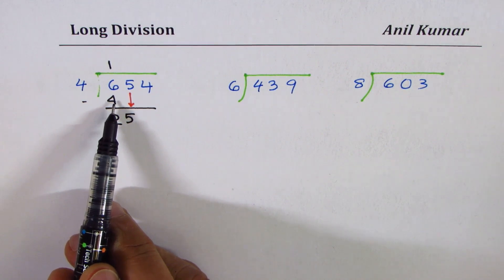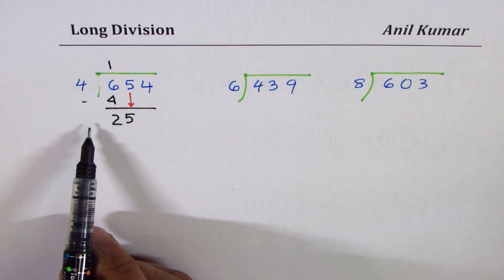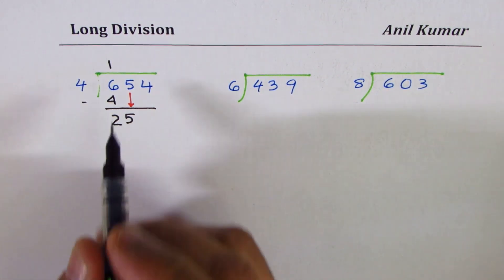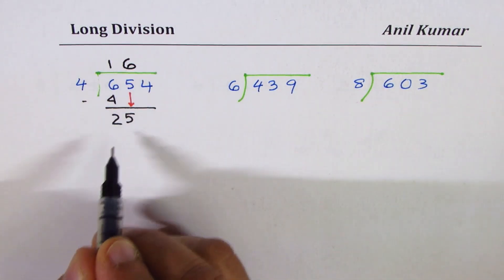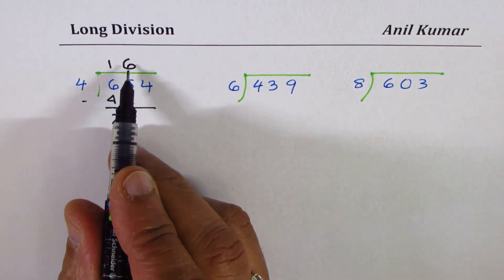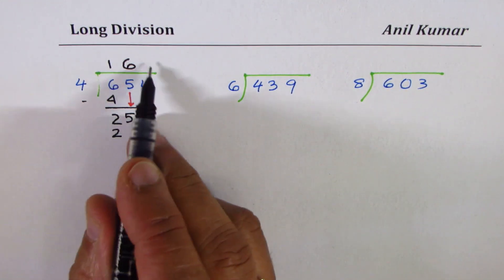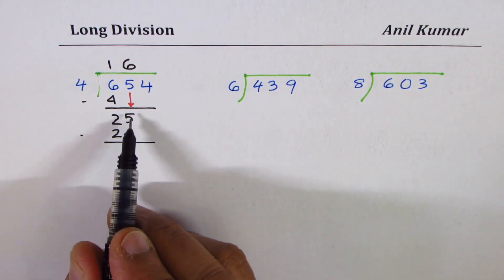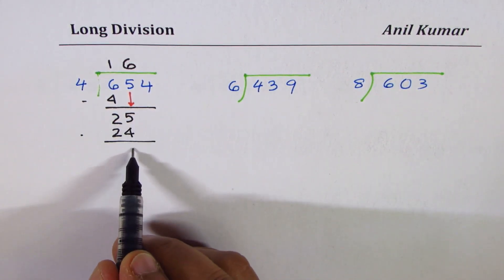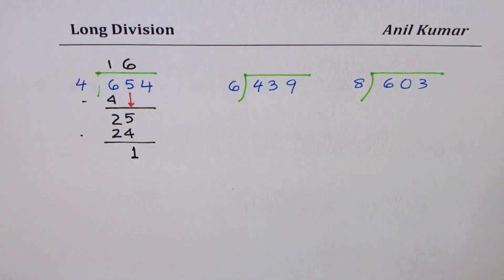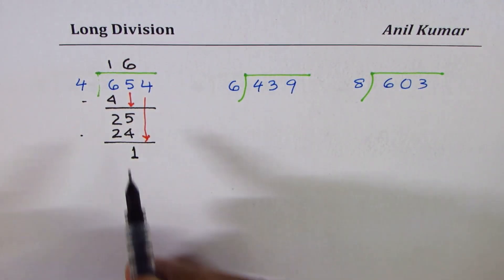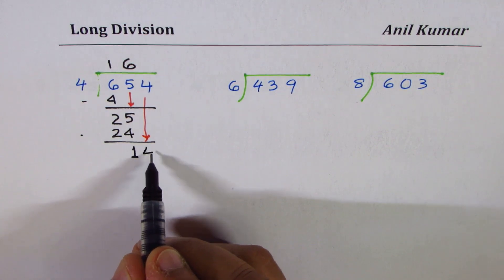Now we have to again repeat this step. We have to see how many times will 4 go into 25. 4 times 6 is 24. Place 6 in the quotient, the answer part, and then write 24. And then again take away. When you take away 24 from 25, you get 1. We still have one more number to go, the third digit. Bring it down now and place it adjacent to 1. It becomes 14.